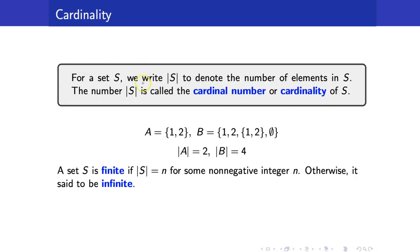Next, let us discuss cardinality. For a set S, we write |S| to denote the number of elements in S — we call this the cardinal number or cardinality of S. For example, if A = {1, 2}, the cardinality of A is 2. And if B = {1, 2, {1, 2}, ∅}, we have 4 elements in B. We say a set is finite if its cardinality equals N for some non-negative integer N; otherwise, it is infinite. In future video lectures, we will discuss more about cardinalities of sets.